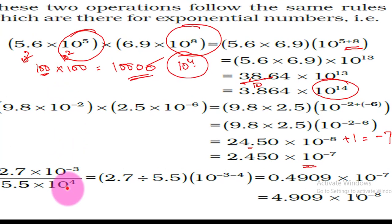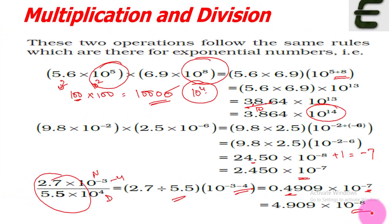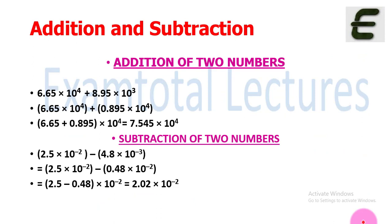For division, what happens is you divide the same way. When the denominator goes up, if it is plus, it becomes minus. For example, 2.7 times 10 raised to power minus 3 divided by 5.5 times 10 raised to power minus 4. So we have minus 3 minus negative 4. Since it's a positive value when it comes up, minus 3 minus minus 4 equals minus 3 plus 4 equals positive 1. Following simple math rules, it will be 0.4909 times 10 raised to power 1, or 4.909 times 10 raised to power minus 1.